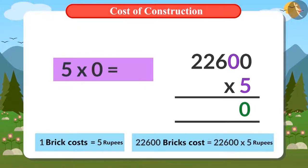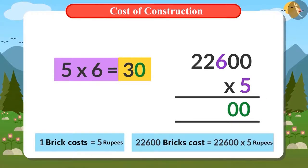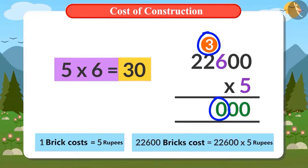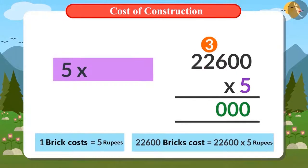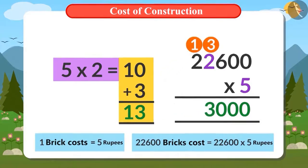Next, 5 is multiplied by 0 again — the answer is 0. Then 5 is multiplied by 6, giving 30. 30 has 0 at the ones place and 3 at the tens place. The ones digit is placed at the designated position, and the tens digit, 3, is carried over. Then 5 multiplied by 2 gives 10; adding the carryover of 3 gives 13. The ones digit is placed and 1 is carried over. Multiplying 5 by 2 again gives 10; adding the carryover of 1 gives 11, which is written as the final digits.